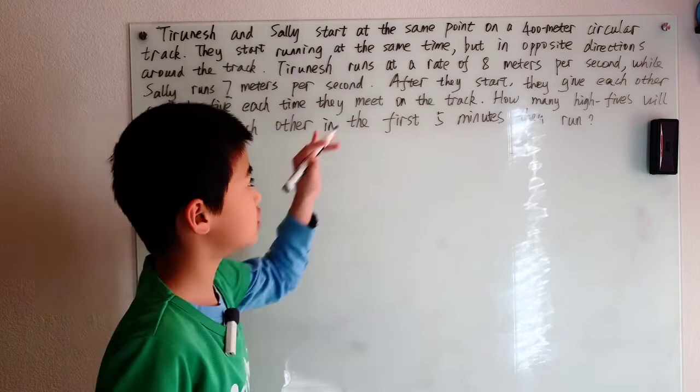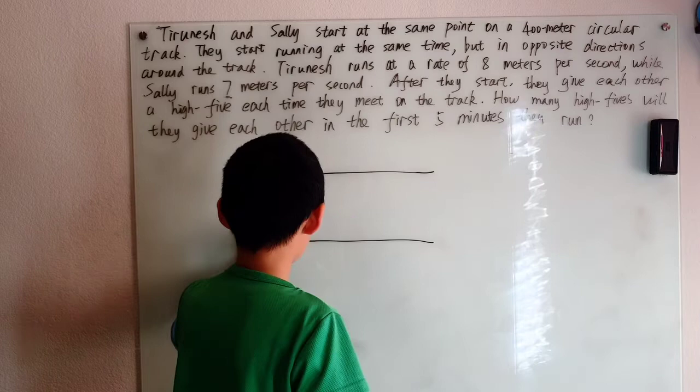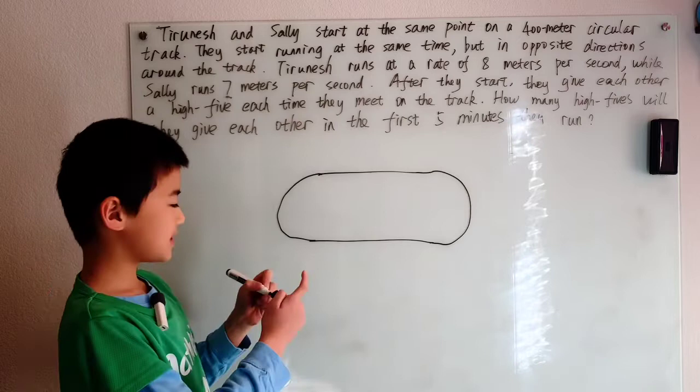I'm going to draw a track but I'm not going to draw a circular track because when I think of a track I basically think of a rectangle with 2 semicircles attached to it. Why?